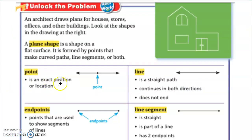A point is this little dot. It's an exact position or location — a point is just literally a dot on a line. A line is a straight path, and it continues in both directions; it does not end. That's what these arrows mean over here — no matter what, the line is going to keep going and going. It has no end.